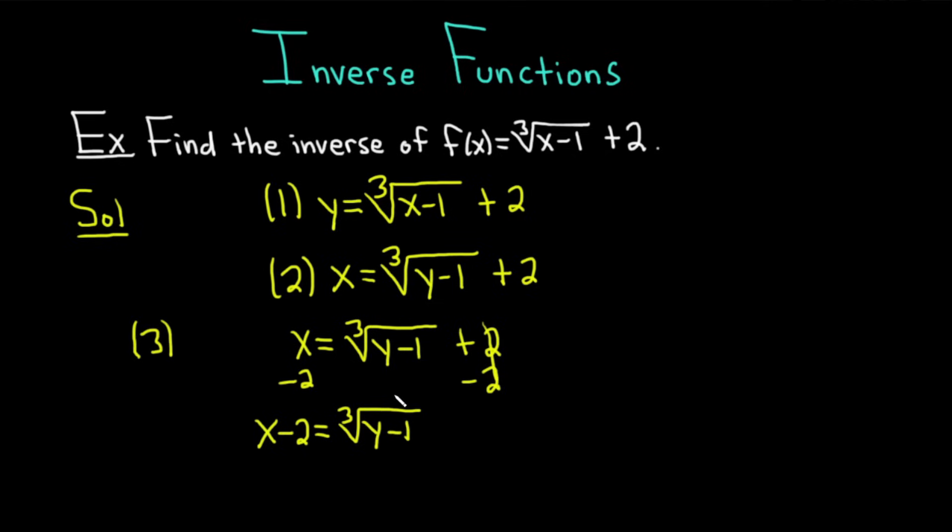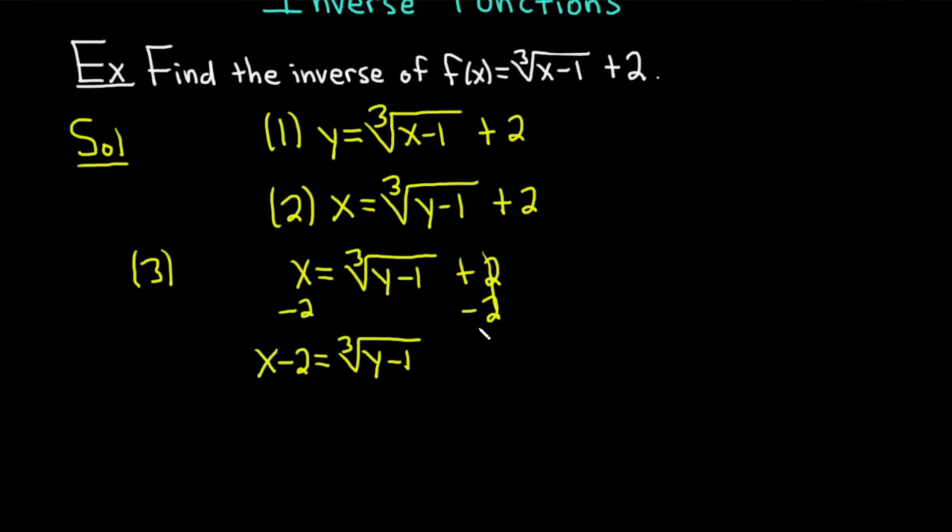So now we've isolated our cube root, so now what we can do is get rid of the cube by cubing both sides. This will get rid of the cube root. So you cube the right-hand side, cube the left-hand side. We end up with x minus 2, and that's cubed, and that's equal to y minus 1.